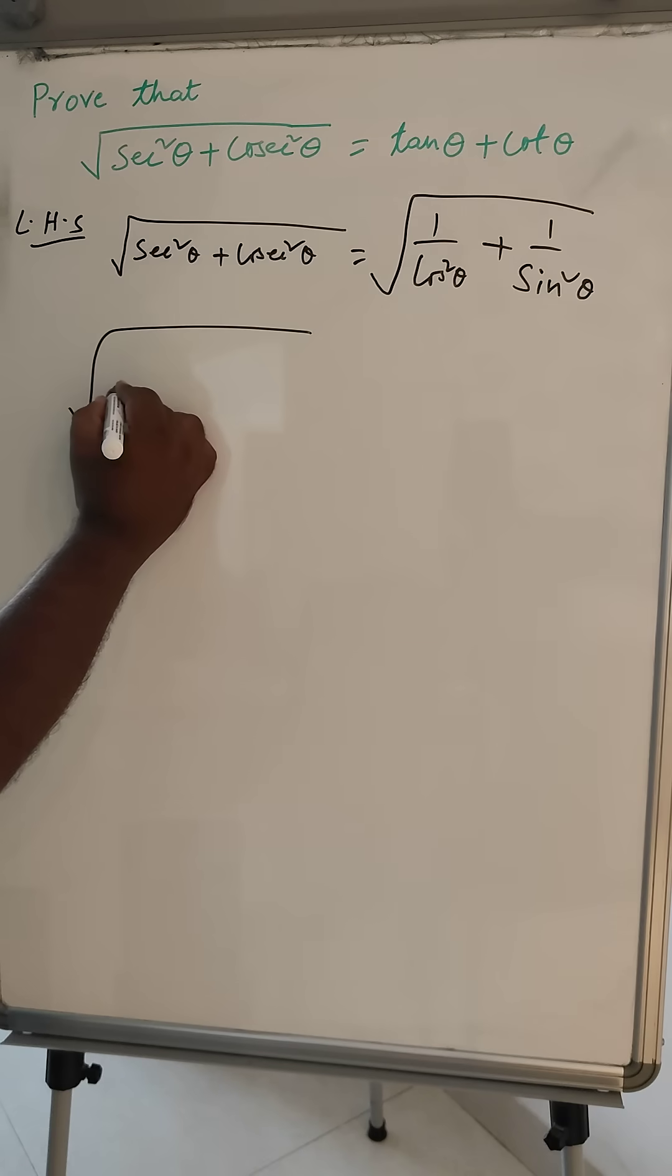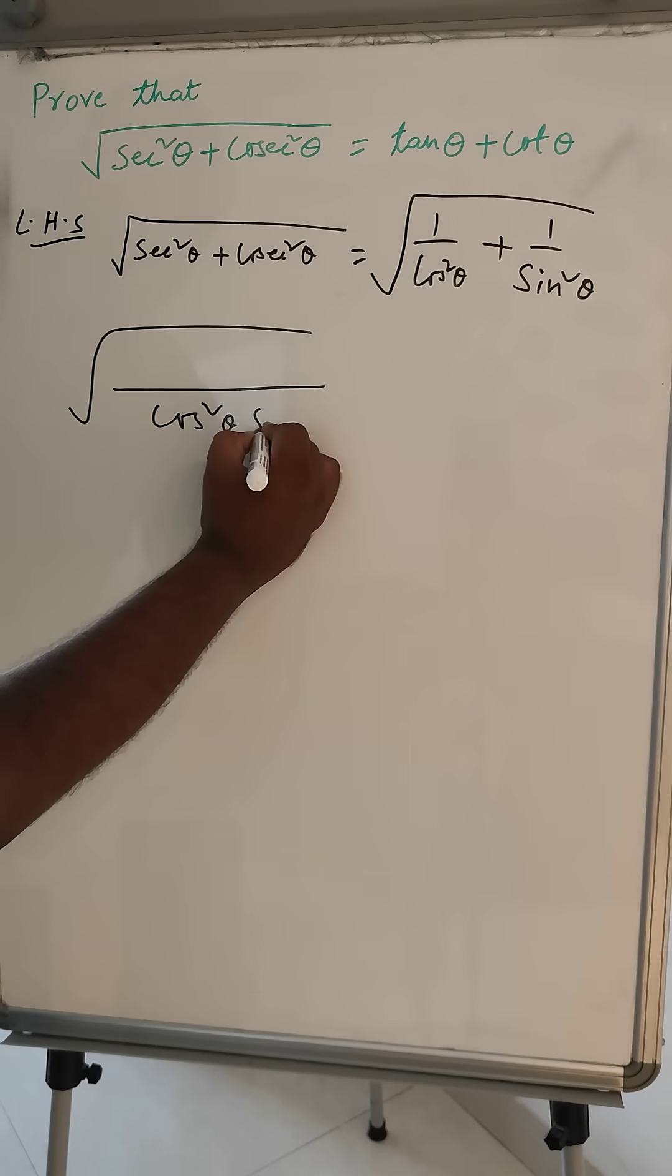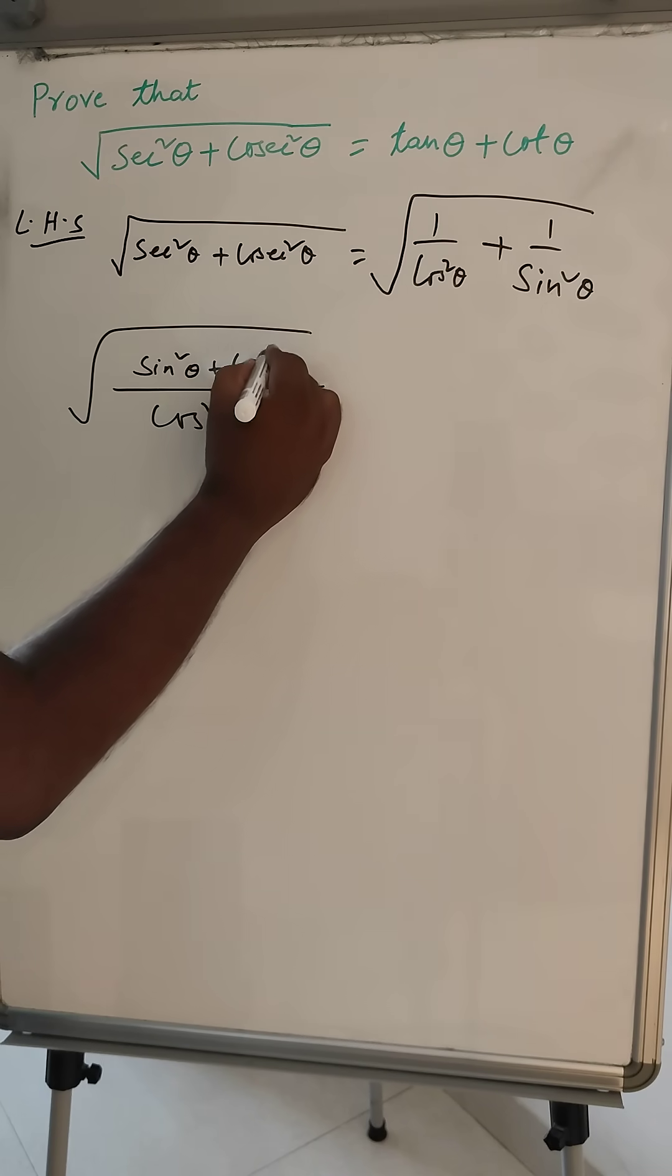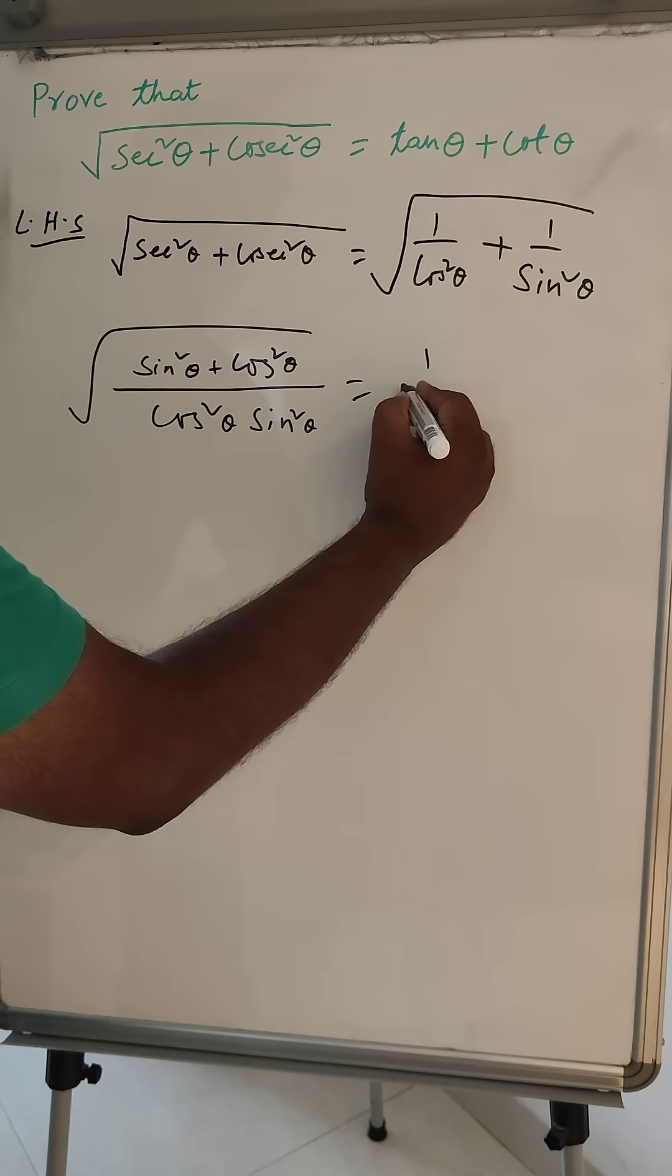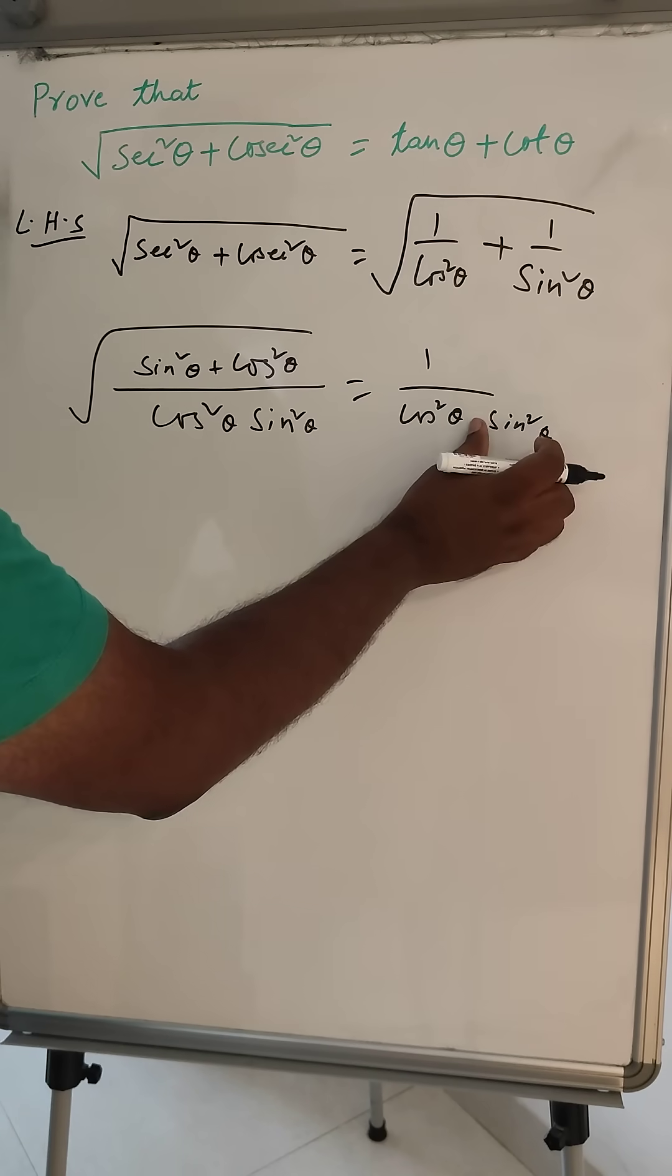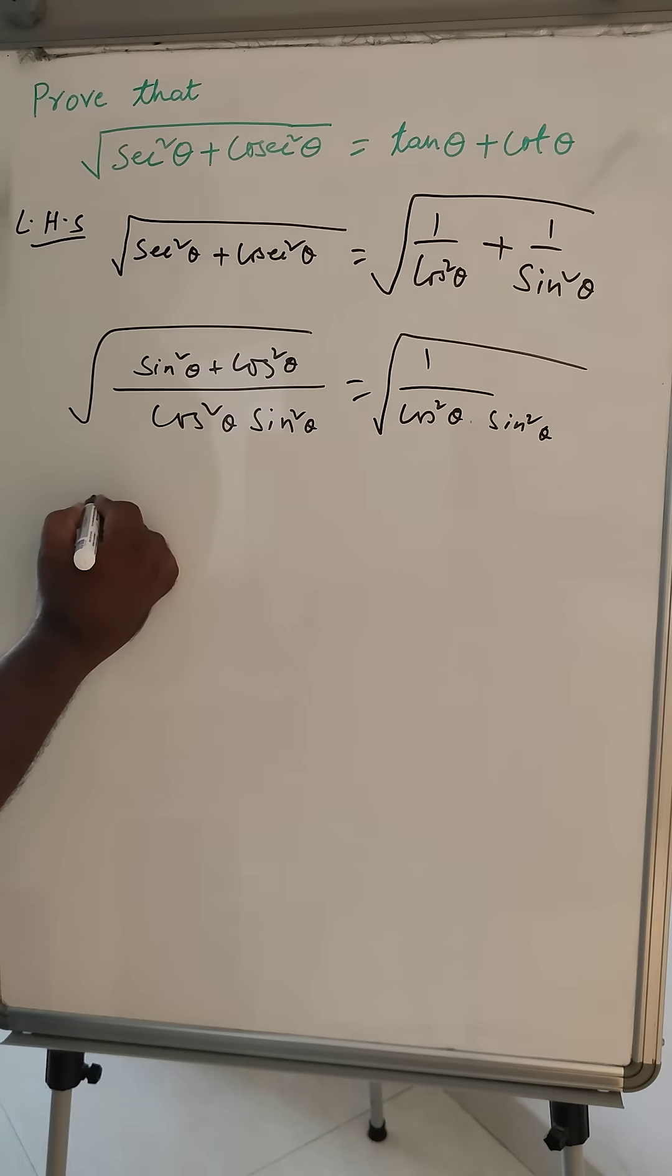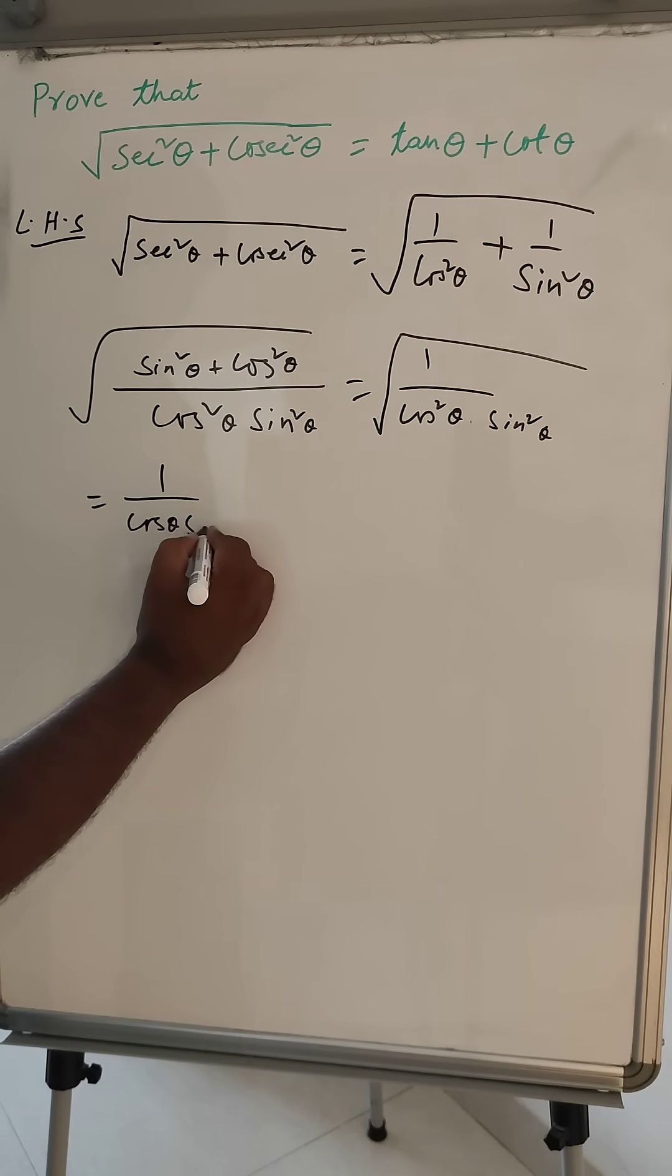we can take LCM cos square theta, sin square theta. Here sin square theta plus cos square theta. So sin square cos square will be one and here cos square theta plus sin square theta. Here cos square theta is equal to sin square theta. So now this will be one by cos theta sin theta.